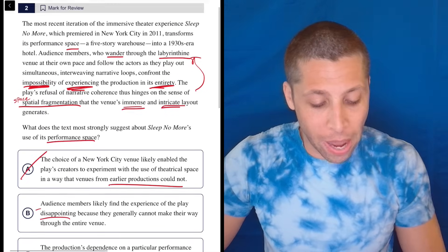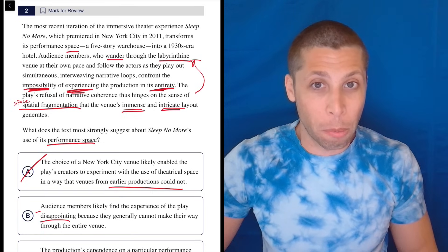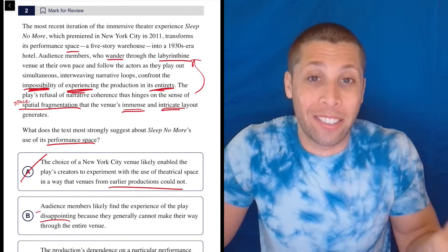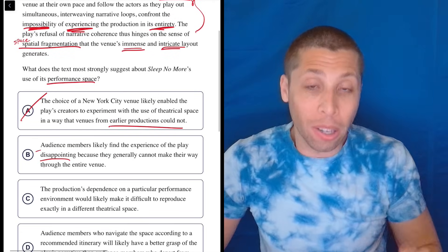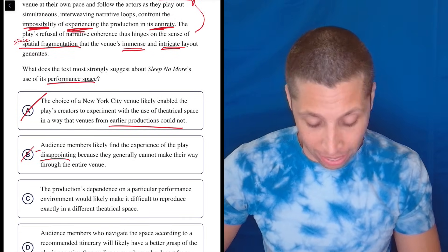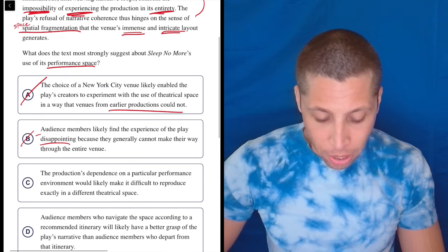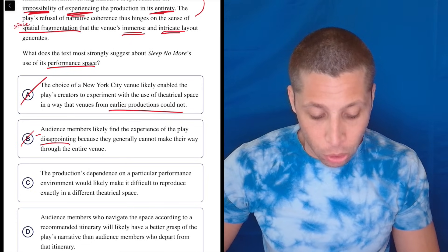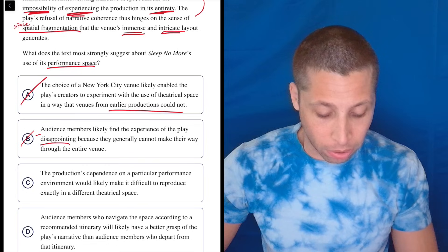I'm not getting a sense from this passage that these people are coming away from the performance upset, disappointed. That's a strong idea that's not there. So even though a big piece of choice B is right, it always has to be completely right, and that's not happening here. C, the production's dependence on a particular performance environment would likely make it difficult to reproduce exactly in a different theatrical space.